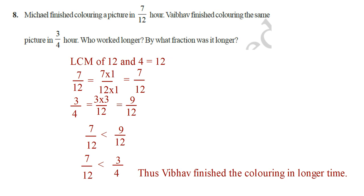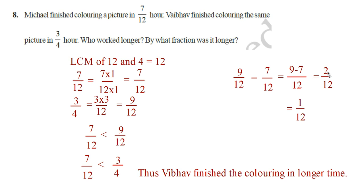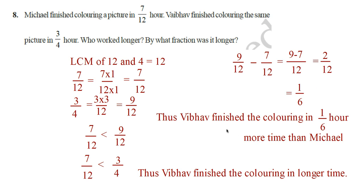By what fraction was it longer? Subtract: 9/12 − 7/12 = 2/12. Simplifying by dividing numerator and denominator by 2 gives 1/6. So Viper finished the coloring in 1/6 hours more time than Michael.